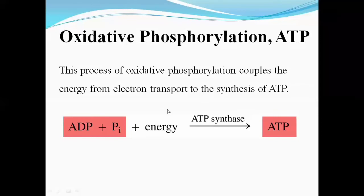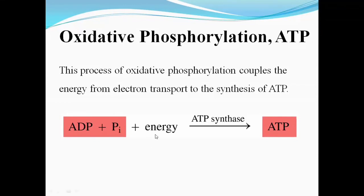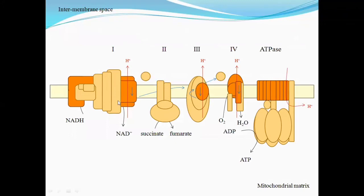The formula for ATP synthesis is: ADP together with inorganic phosphate, in the presence of energy provided by the electron transport chain, forms ATP. The energy comes from the electron transport chain — when electrons are transferred, hydrogen ions are pumped from the matrix into the intermembrane space. This pumping of hydrogen ions occurs only through complexes one, three, and four, but not through complex two.